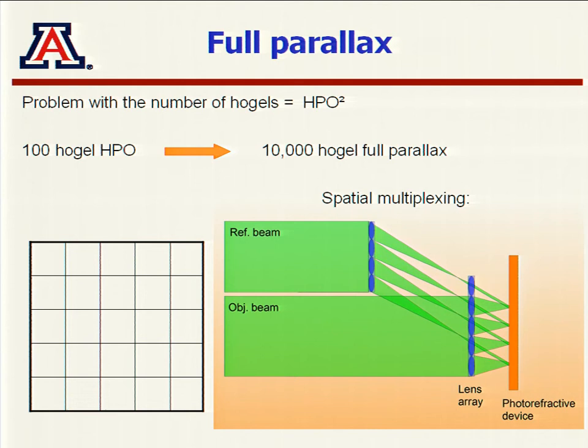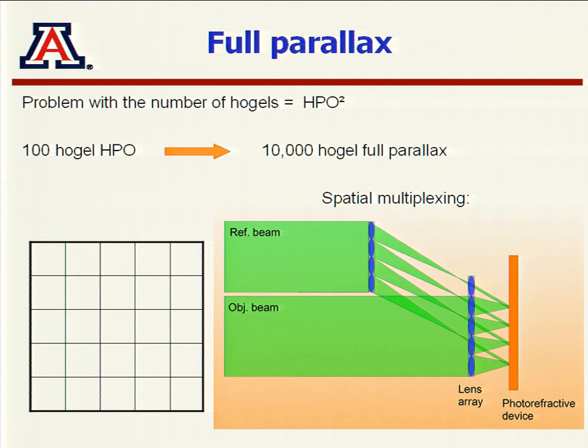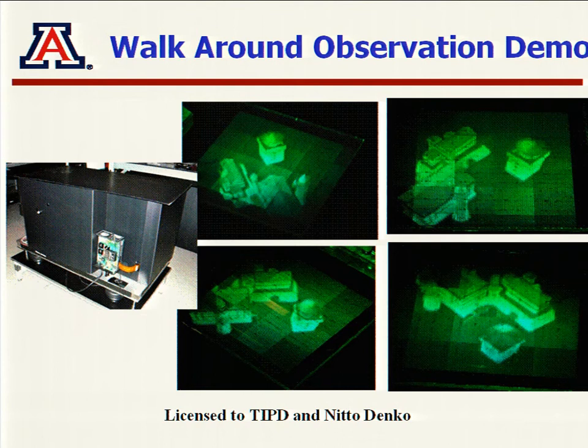To show different views from different sides you need what's called full parallax, as opposed to horizontal parallax. In full parallax, holographic pixels form a 2D array — the number of pixels scales as N squared — while in horizontal parallax you have cylinders scaling as N. Full parallax gives you more views, meaning it takes longer to write, but we have put systems together to actually write full parallax systems.